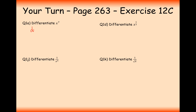Let's go through these. So dy/dx of 7x to the 7: the 7 multiplies to the front, giving 49, and we reduce the power by 1 to a 6, so dy/dx equals 49x to the 6. In this case, dy/dx of x to the 1/3: multiply the 1/3 to the front, and then reduce 1/3 by 1. A third take away 1 is minus 2/3, so it's (1/3)x to the power of minus 2/3.